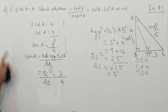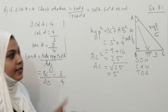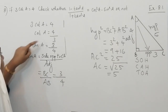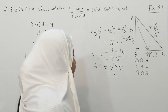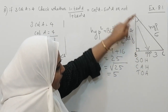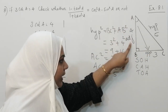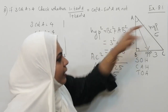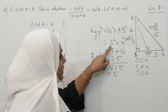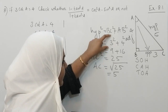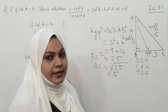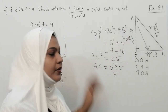So to summarize: 3cotA equals 4 means cotA equals 4 by 3, and tanA equals 3 by 4. Using SOHCAHTOA with opposite equals 3 and adjacent equals 4, we apply Pythagoras: 3² plus 4² equals 9 plus 16 equals 25, so the hypotenuse AC equals 5. Now our right-angle triangle is complete and we can start solving.